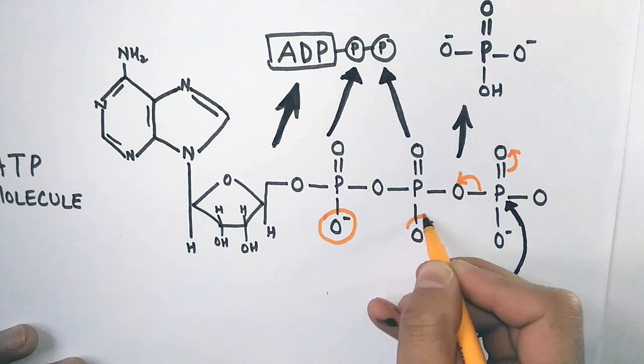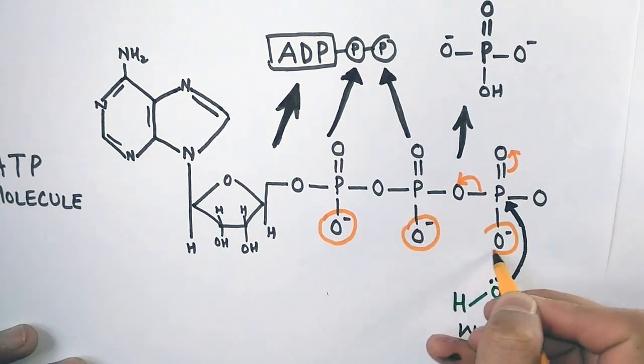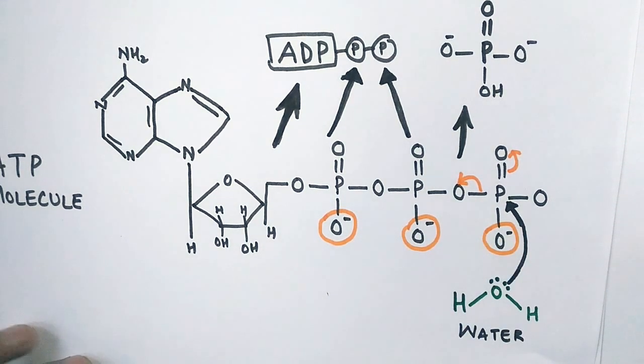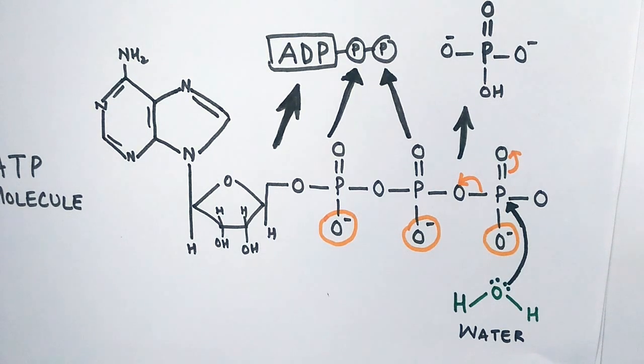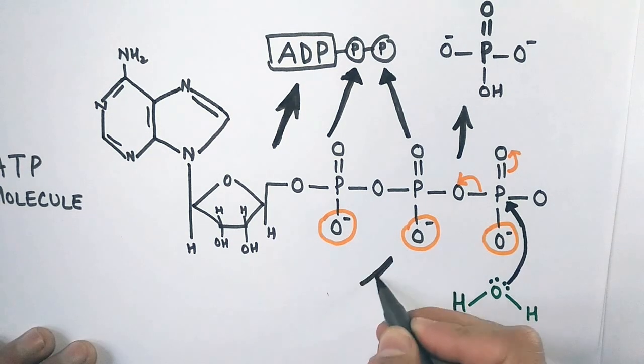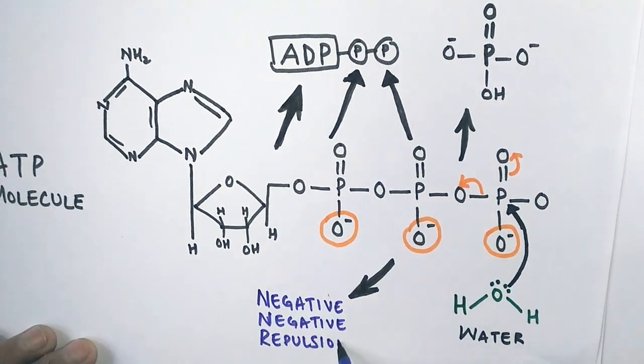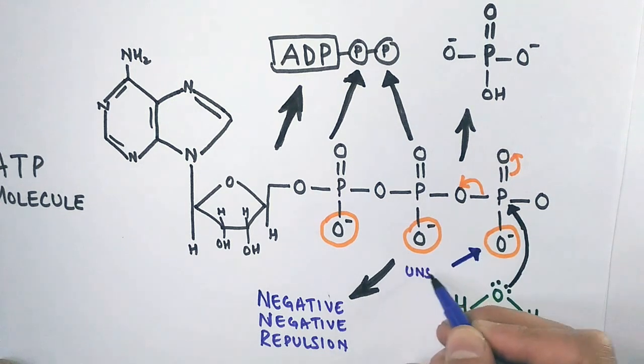It's those three highly negative groups together that makes the terminal gamma phosphate vulnerable to hydrolysis. A negative-negative repulsion occurs here, and the terminal phosphate is always in an unstable state.